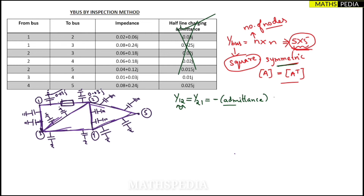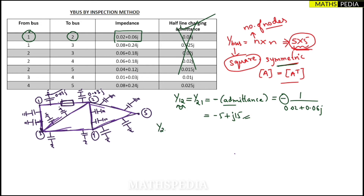Y12 = Y21 = −1/(0.02+0.06j) = −5 + j15. For Y13 = Y31, between nodes 1 and 3 the impedance is 0.08+0.25j, so Y13 = −1/(0.08+0.25j) = −1.25 + j3.75.